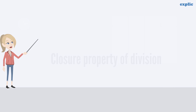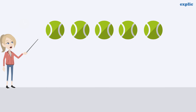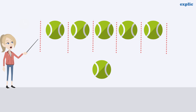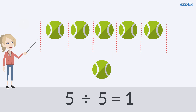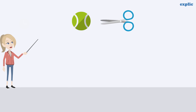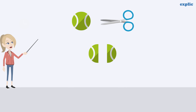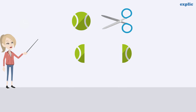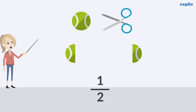Now, division. What will happen if you divide 5 into 5 equal parts? The answer is 1, which is a whole number.